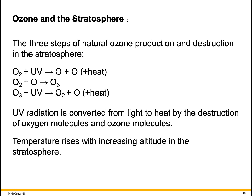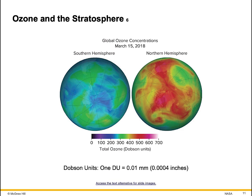UV radiation is converted from light to heat by the destruction of oxygen molecules and ozone molecules, and the temperature rises with increasing altitude in the stratosphere. Looking at global variations in ozone concentrations from March 2016, ozone concentrations increase with latitude. Concentrations are greater in the Northern Hemisphere during its spring and greatest in the Southern Hemisphere during the Northern Hemisphere's fall.